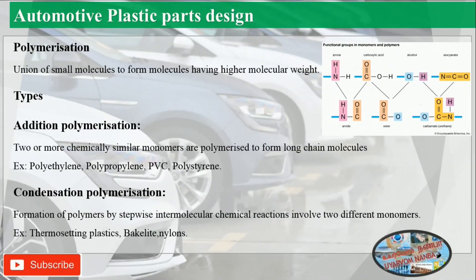The union of small molecules to form molecules having higher molecular weight is called polymerization. It is categorized into two types. Addition polymerization: two or more chemically similar monomers are polymerized to form long chain molecules. Examples include polyethylene, polypropylene, PVC, and polystyrene.